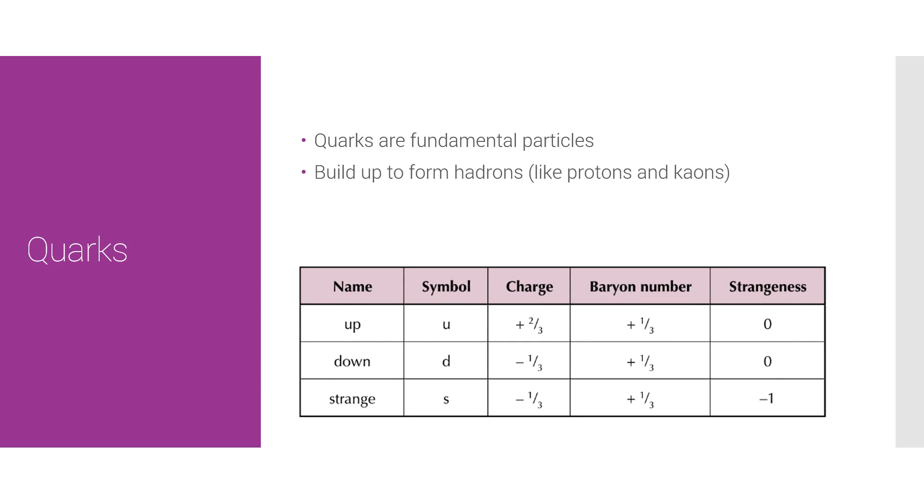There are actually six quarks, the other three are charm, top and bottom, but we'll focus on up, down and strange. As you can see, the charges and baryon numbers of all these are in thirds, but as we know, particles need to have a whole number of charge, so that's why some quark combinations just do not work.